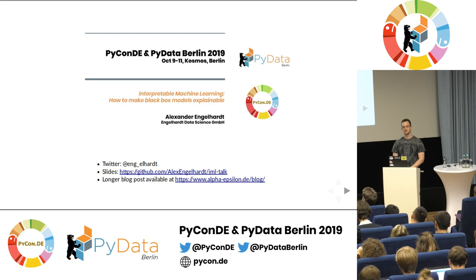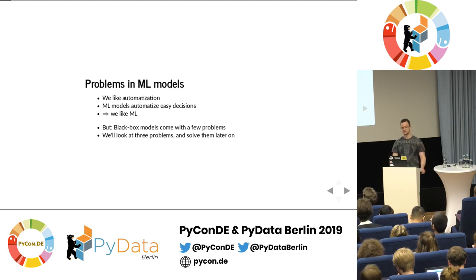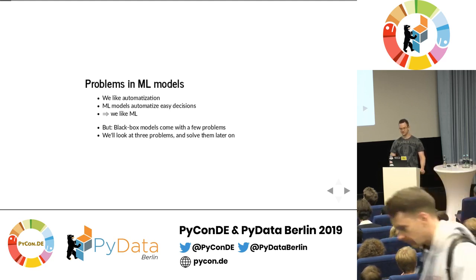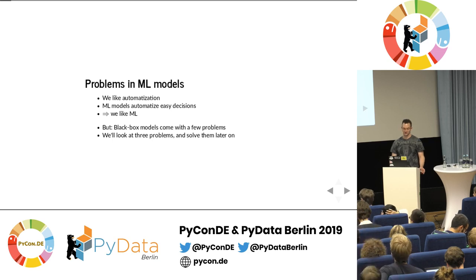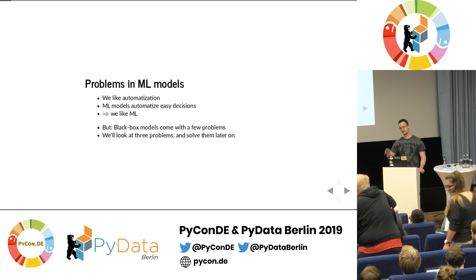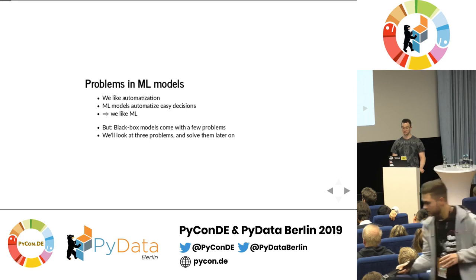This is a very short introduction into a few basic methods of interpretability. To motivate the topic briefly: machine learning is good because we like automation, and machine learning automates decision making. What had to be done by a human earlier — for example, sorting letters by postcode — can now be done by a computer, which saves resources that can then be used on new, more challenging and interesting problems.